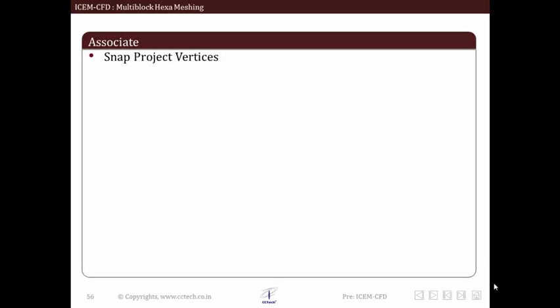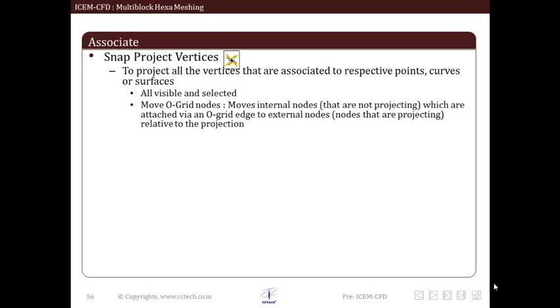Next operation is snap project vertices. This option allows us to project all vertices that are associated to respective points, curves or surfaces. We can either select vertices or instead all visible to project vertices. The move O-grid nodes option moves internal nodes which are attached via an O-grid edge to external nodes. It is generally recommended to snap vertices once we are done with association which helps a lot while providing node clustering.